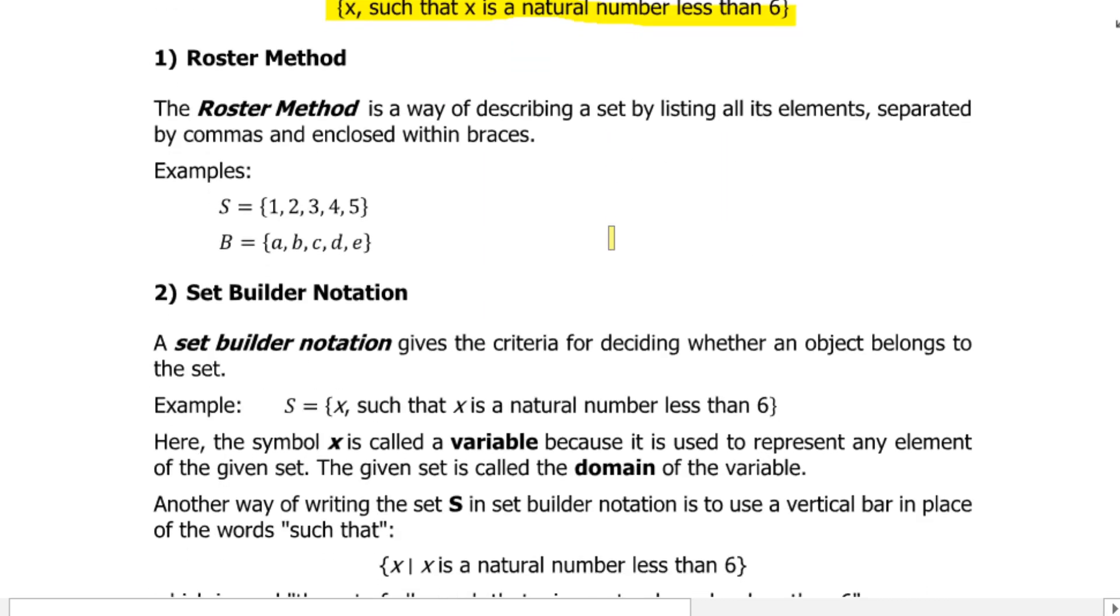Based on this illustration, there are two ways to write a set. The first one is called the roster method. The roster method is a way of describing a set by listing all its elements, separated by commas and enclosed within braces. Examples: set S has elements one, two, three, four, five, and set B has elements a, b, c, d, e. These are written in roster method because the elements are all written inside enclosed braces.